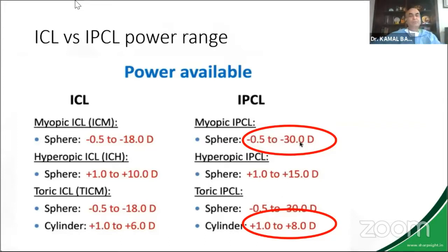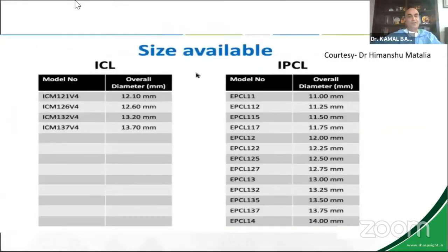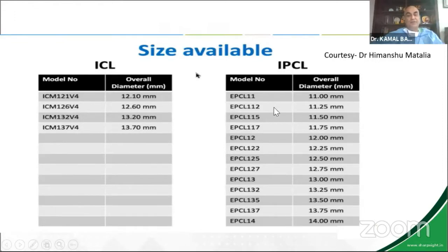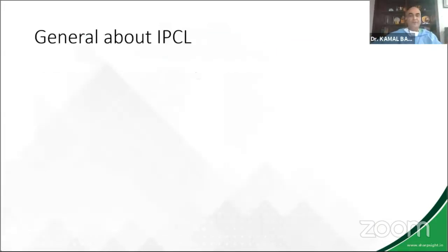There are different powers available — IPCL is available in powers up to 30 diopters and I've done up to minus 36. Cylinders are officially available till 8 diopters but I've done up to 11, and recently I've done 14 diopters of astigmatism. The sizes available in ICL are only four, whereas in IPCL you have 13 sizes available. That's why IPCL has become my personal favorite — I can fine-tune and tailor it to the requirement of my patients.